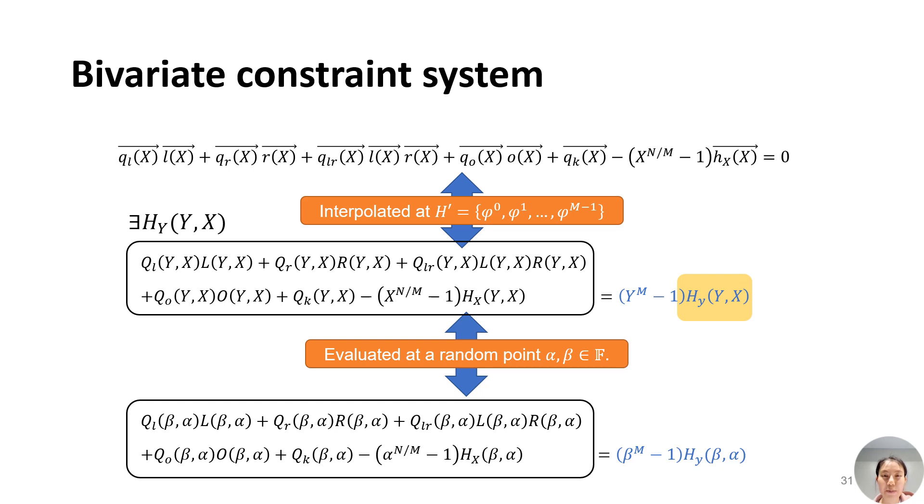Later, by applying Schwartz-Zippel lemma, we can also check the bivariate identity only on their evaluations at a random point (beta, alpha).